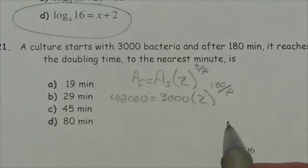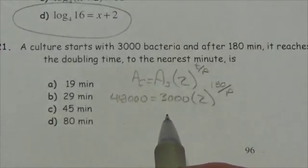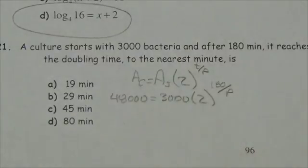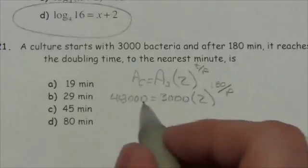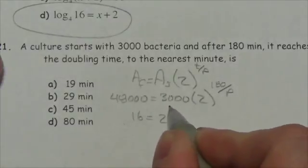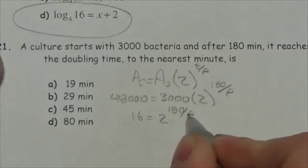First, I'll divide both sides by 3,000 to isolate the power term, since 3,000 is just a coefficient. When I do that, I get 16 equals 2 to the 180 over p.